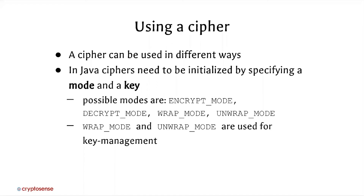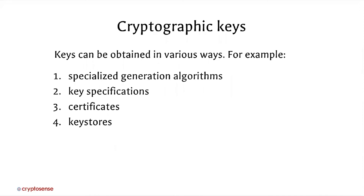To do our ciphering and decryption, we need a cryptographic key, and we can obtain these in various ways. We can use a specialized key generation algorithm to generate a new, completely unpredictable fresh key using a cryptographically secure random number generator. We can use key specifications to get a key from somewhere else and tell Java how to use it. We can also fetch keys from certificates — a certificate essentially says a certain public key in an asymmetric key system belongs to a certain person — or we can get keys from a keystore, which is a software file we load and grab keys from.